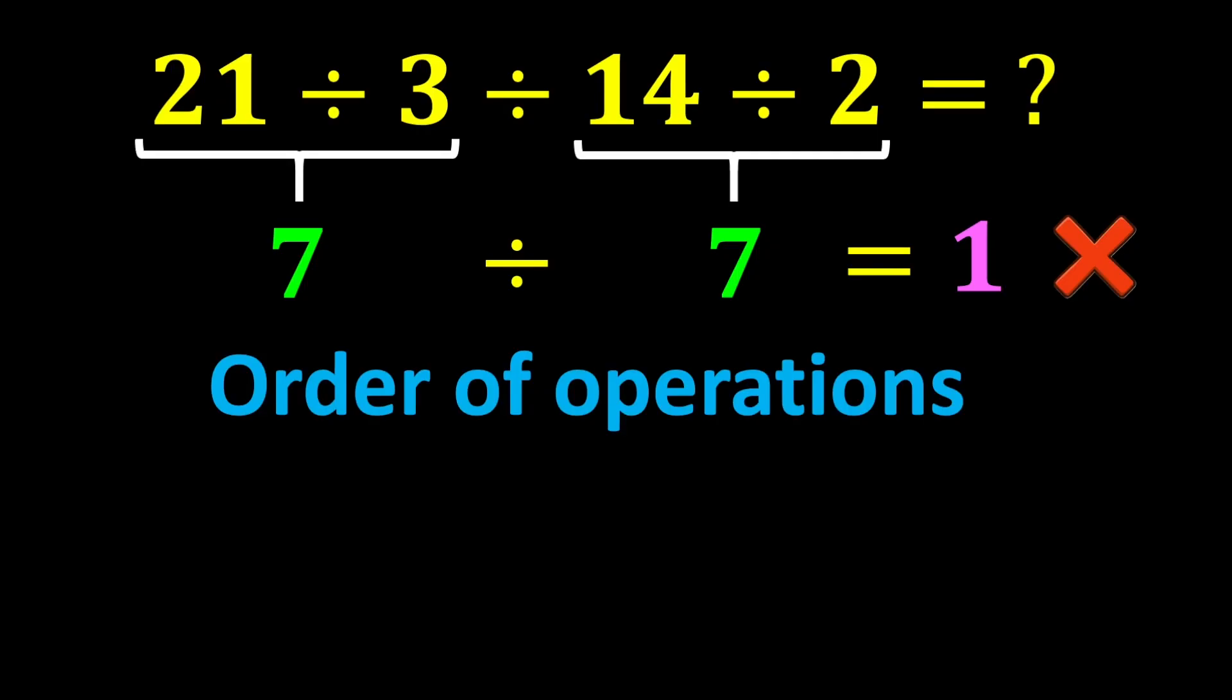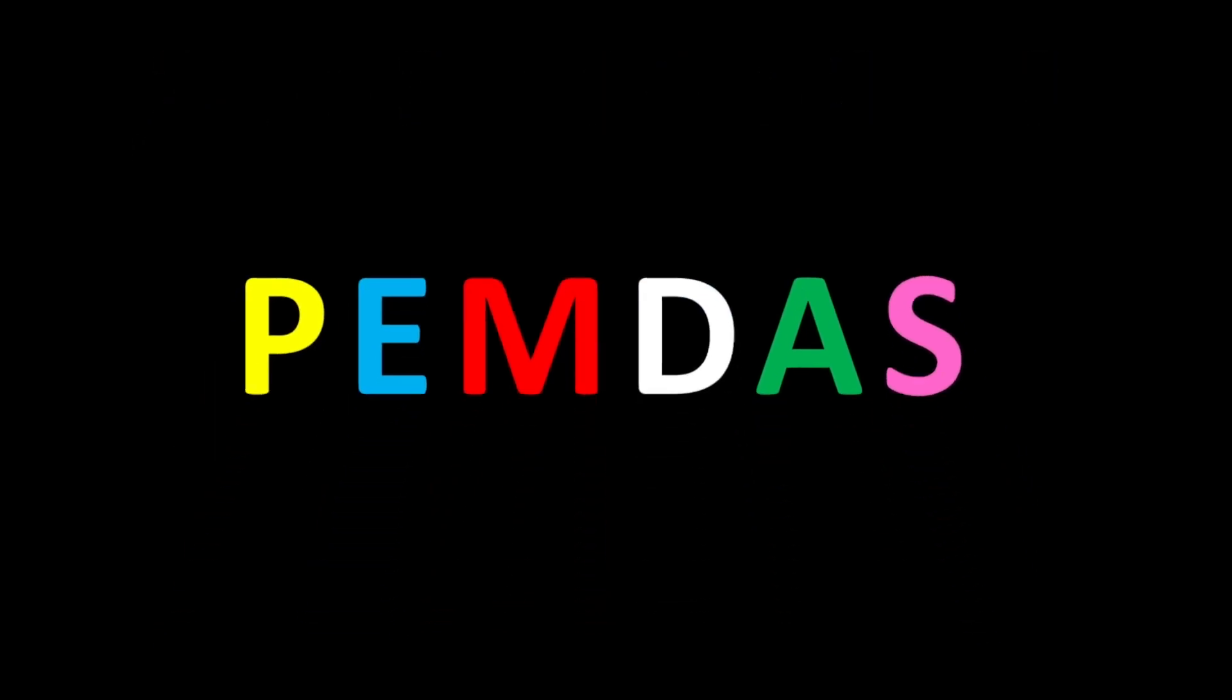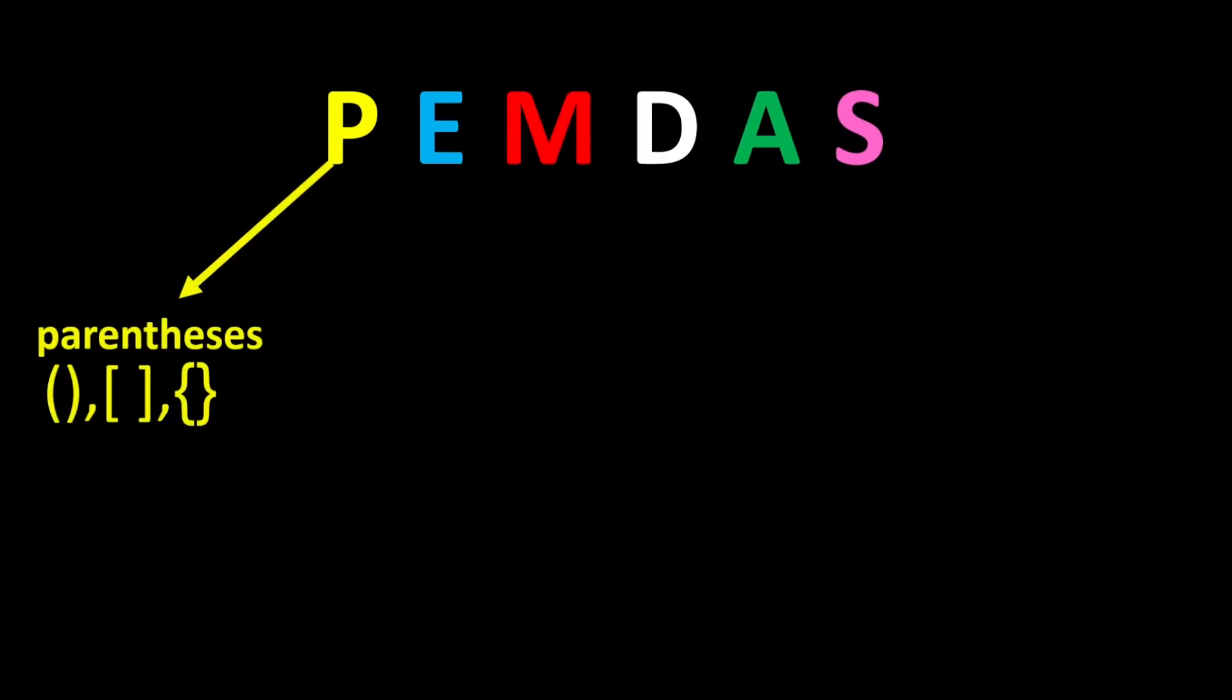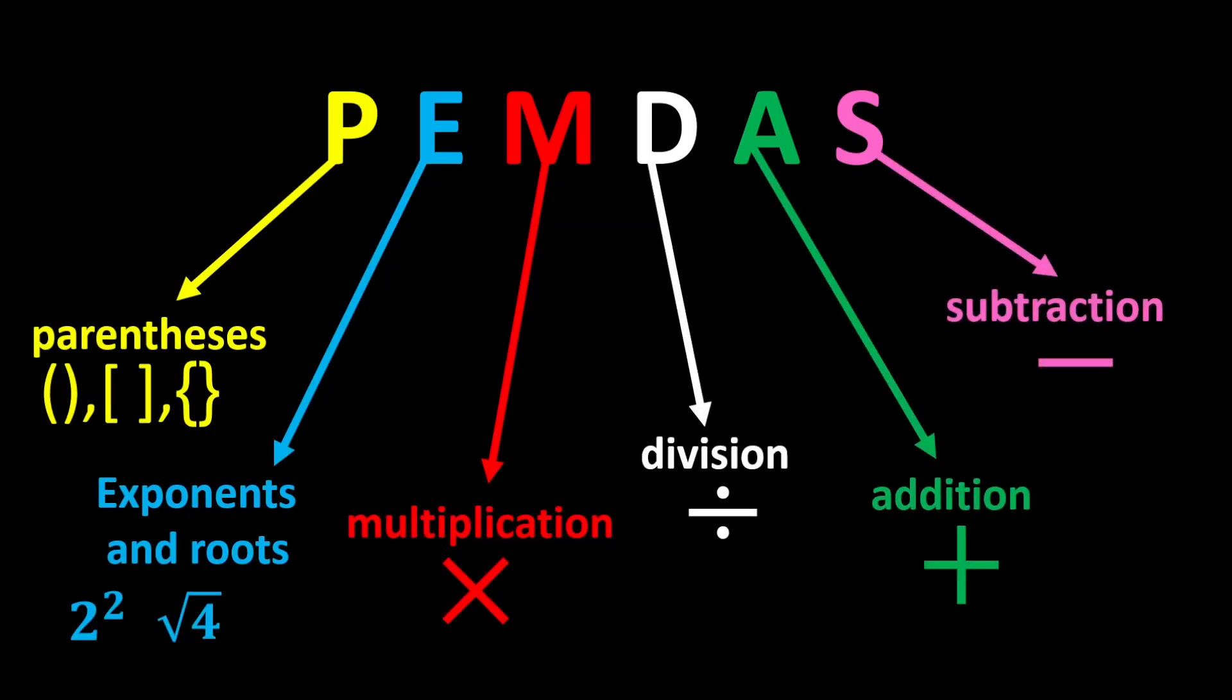The correct order of operations is known by a short acronym called PEMDAS. P stands for parentheses. E stands for exponents and roots. M stands for multiplication. D stands for division. A stands for addition. And S stands for subtraction.